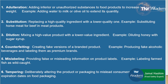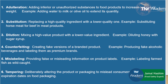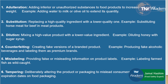Number four, counterfeiting: creating fake versions of branded products — for example, producing fake alcoholic beverages and labeling them as premium brands. Number five, mislabeling: providing false or misleading information on product labels — for example, labeling farmed fish as wild-caught. Number six, tampering: deliberately altering the product or packaging to mislead consumers — for example, changing expiration dates on food packaging.